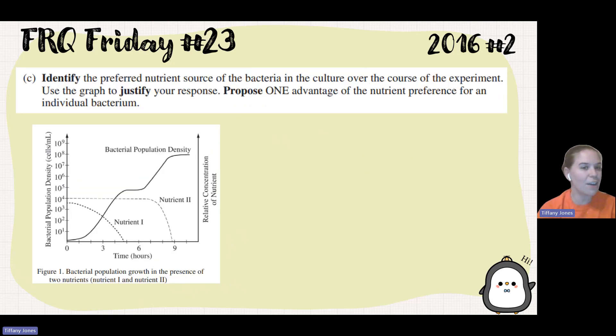Part C, identify the preferred nutrient source of bacteria in the culture over the course of the experiment. If we look at the experiment, at the beginning we have both nutrient one and nutrient two. Nutrient two kind of stays stagnant, like it's not being used, versus nutrient one immediately goes down. That tells us that nutrient one is going to be the preferred nutrient. Because the bacteria prefers to use nutrient one, it's going to consume nutrient one first, which means that its concentration decreases. While nutrient two that was not being used stays kind of level in its concentration until it starts being used.